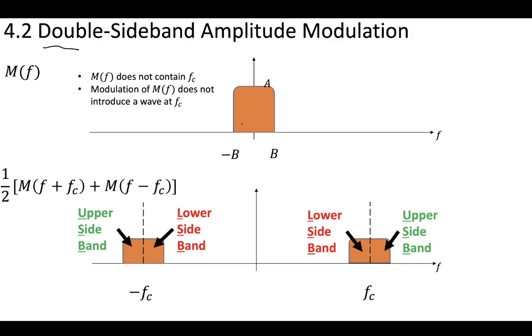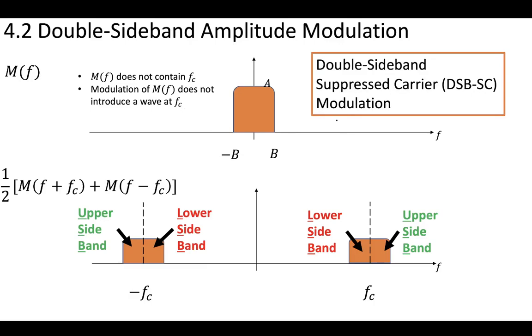Now, some things to note. Our original message, this is our original message, and it does not contain this frequency fc. Our entire original message is below fc. Therefore, when we make a message M(f) in the frequency domain or modulate that cosine wave, we are not introducing any wave components at fc.